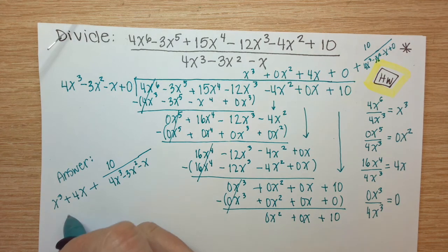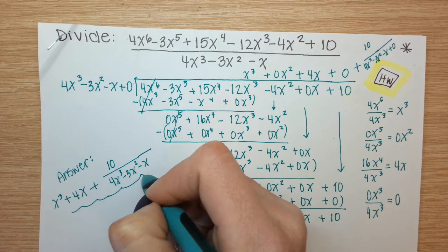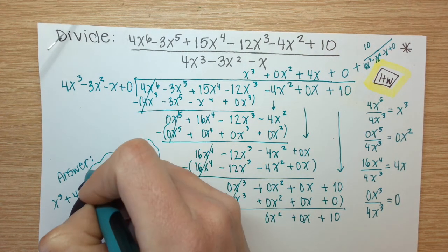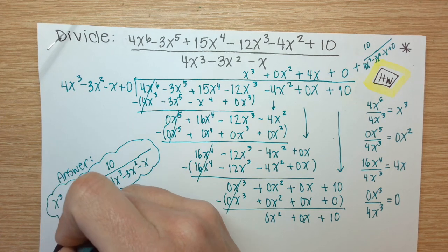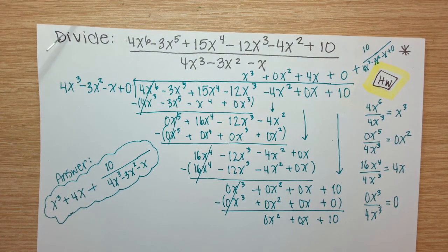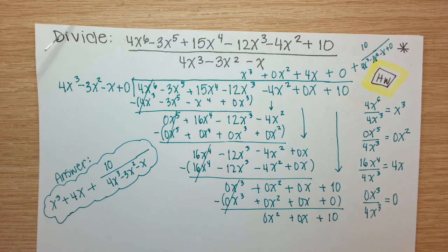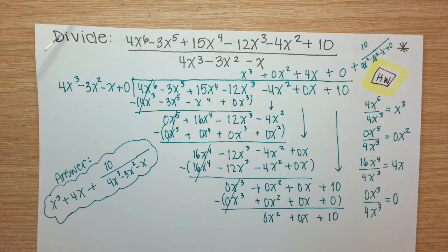10 over 4x to the 3rd minus 3x squared minus x. So, this was perfectly acceptable. I have a remainder. That means that the divisor is not a factor of the dividend. However, this is the full quotient with the remainder included.